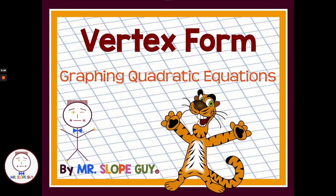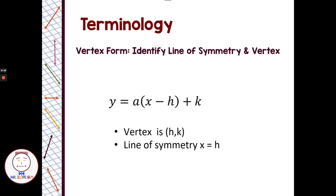Today we're going to talk about vertex form and its uses with graphing quadratic equations. Vertex form is y equals a times x minus h squared plus k. When we have an equation in this form, we can pull the vertex of h comma k. And our axis of symmetry would be x equals h.